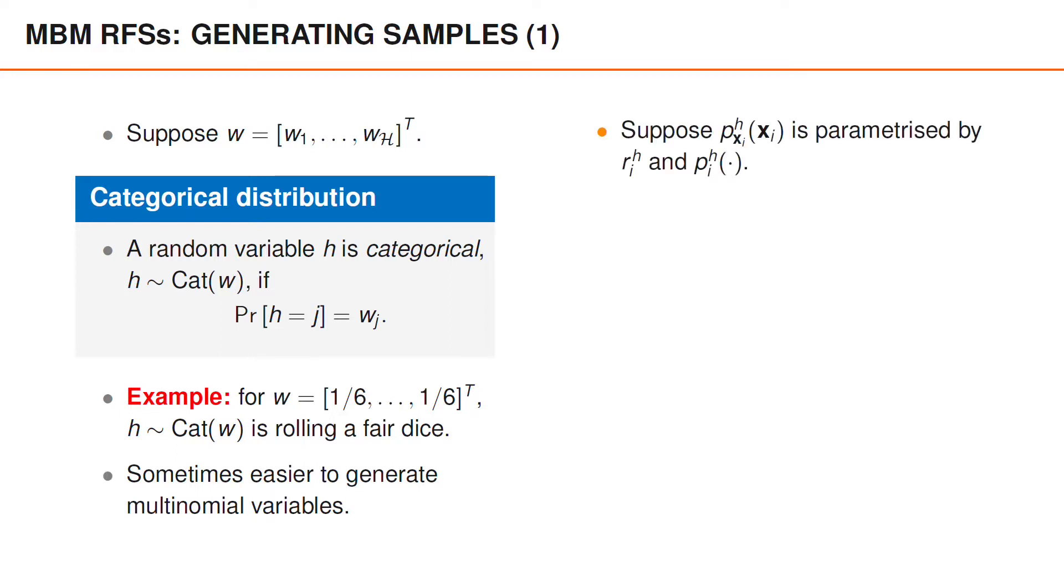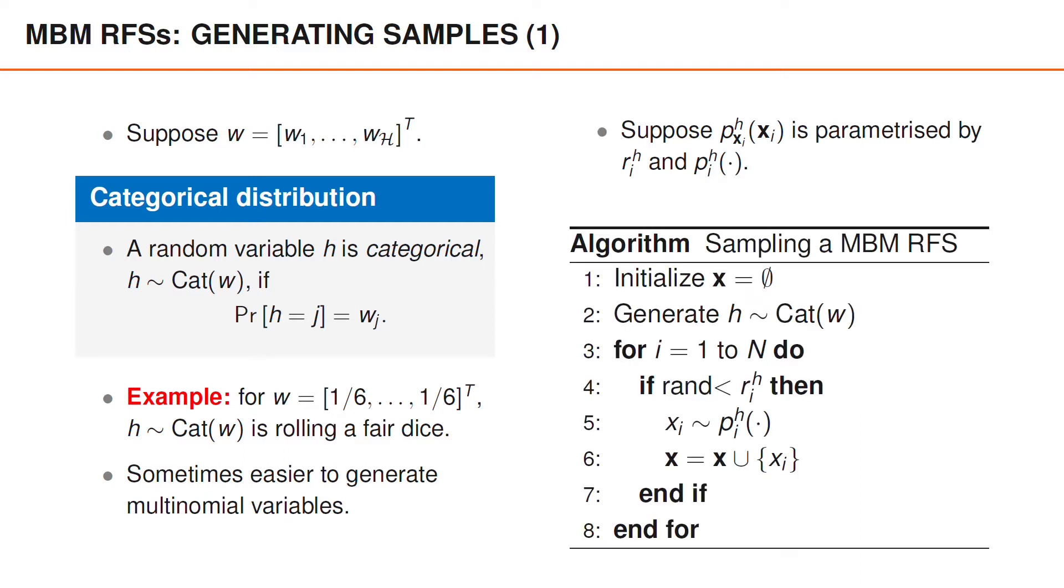To obtain a compact notation, we assume that the Bernoulli PDF, P_H^i, is parameterized by r_H^i and the spatial PDF, p_H^i. Given that we know how to sample a multi-Bernoulli random finite set, it is simple to sample a multi-Bernoulli mixture random finite set. As before, we initialize the set as empty.